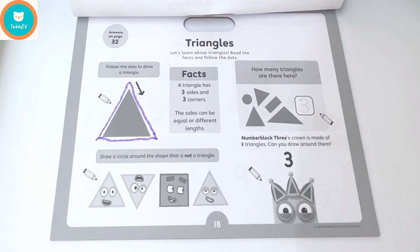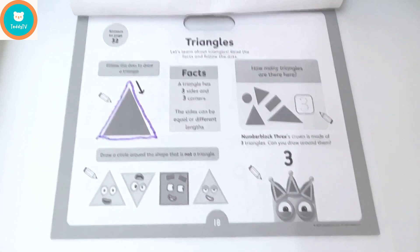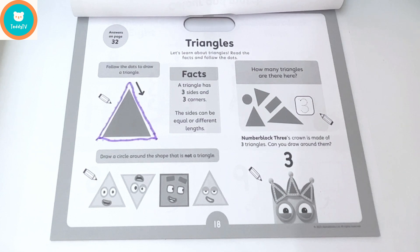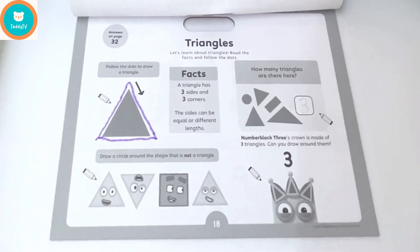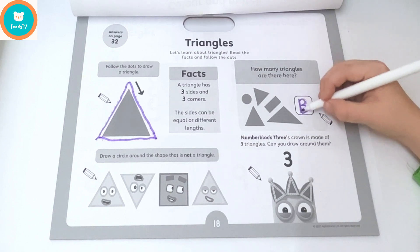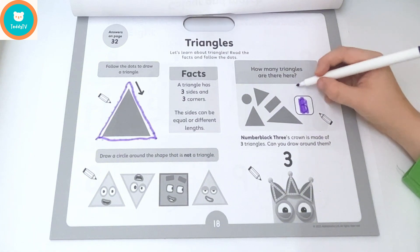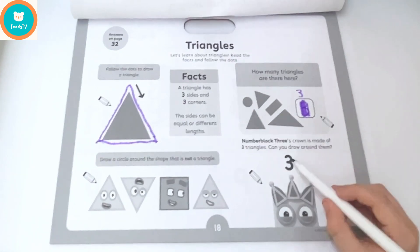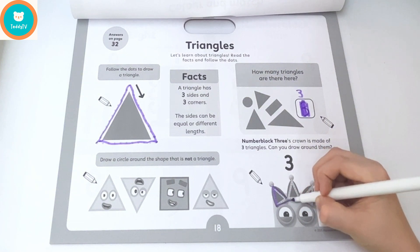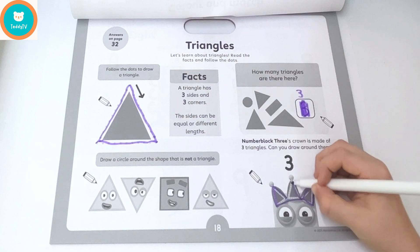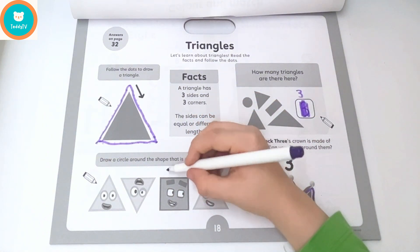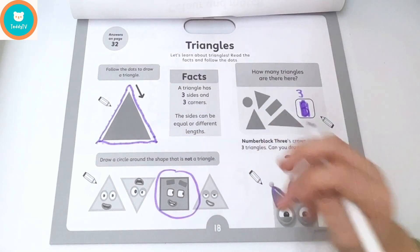How many triangles are there? There's one, two, three — yeah, there's three! Number Block three's crown is made of three triangles — can you draw around them? Draw a circle around the shape that is not a triangle. Sorry, four — time to eliminate you! Bye-bye!